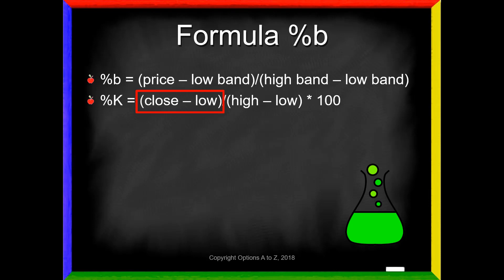For %B, we divide by the high band minus the low band. Look at what we do for %K: high price minus the low price. For %K, yes, we multiply by 100, but that was just to get rid of the decimal point. You can see that the idea is exactly the same. So if you understand stochastics, you will instantly understand %B — it's the same idea just applied to Bollinger Bands.